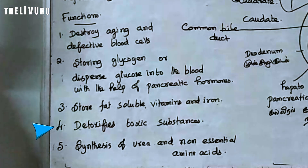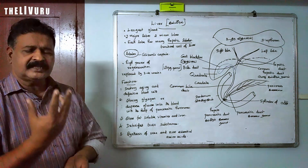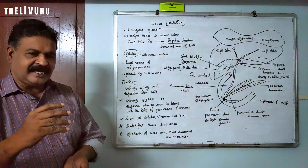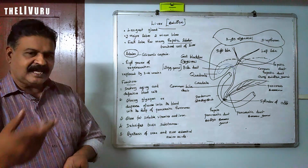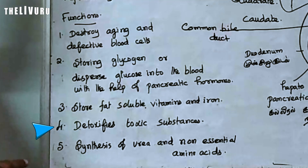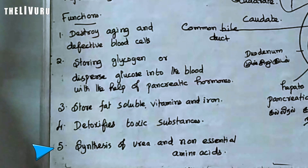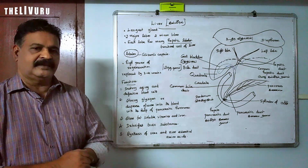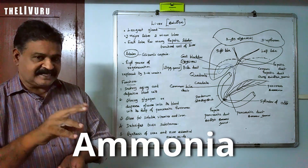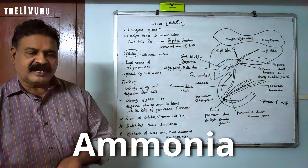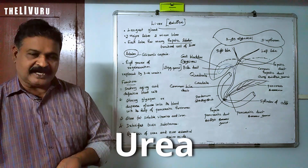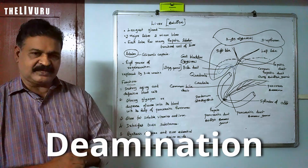The liver detoxifies toxic substances — if there is any poison in our body, the liver can neutralize it. The liver also performs synthesis of urea and non-essential amino acids. Our cells produce ammonia as a nitrogenous waste, which is converted into uric acid and then into urea. This process is known as the deamination process.